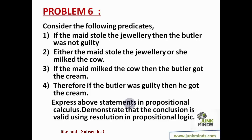It's a very simple, straightforward one. Consider the following: if the maid stole the jewelry then the butler was not guilty; either the maid stole the jewelry or she milked the cow; if the maid milked the cow then the butler got the cream; therefore if the butler was guilty then he got the cream. Express these statements in propositional calculus and demonstrate that the conclusion is valid using resolution. This is the same kind of problem we've been solving, except instead of predicate logic I'm using propositional logic, which makes life a lot easier.